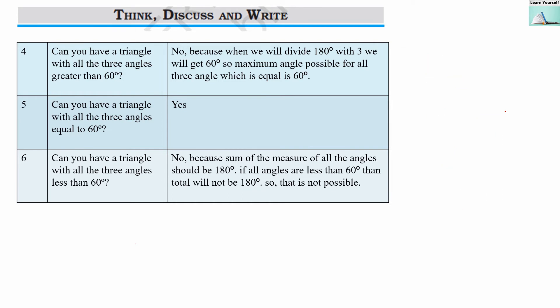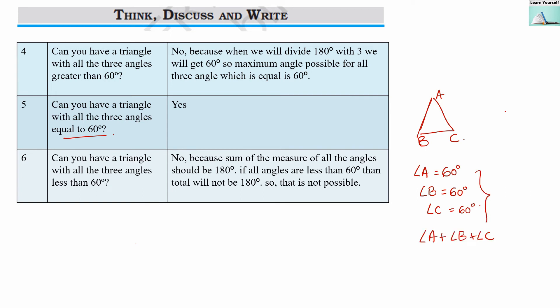Our fifth question: can you have a triangle with all three angles equal to 60 degrees? Yes — all three angles can equal 60 degrees. In triangle ABC, if each angle is 60 degrees, adding them gives 180 degrees. So yes, it is possible. This is the equilateral triangle case.